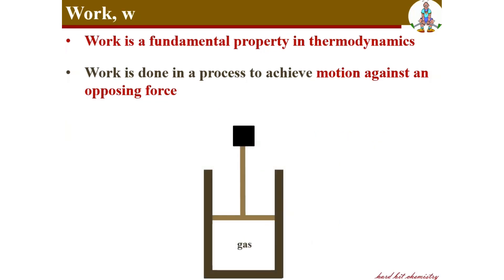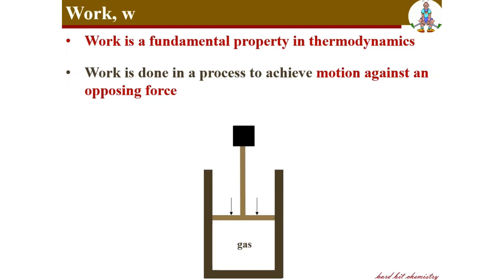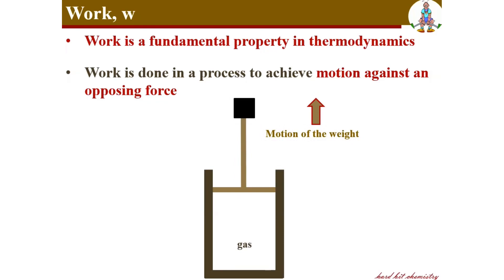Consider a system where a gas is placed in a cylindrical vessel provided with a freely moving piston on the top, and a weight is attached on top of the piston. The piston applies some pressure on the gas — there is a downward piston pressure — and in opposition, the gas does some work against the piston pressure so that the weight on the piston can be lifted up. The weight moves upward against the piston pressure which was applied downward.